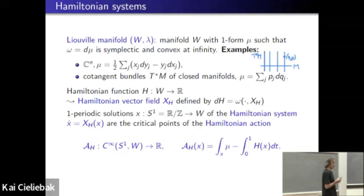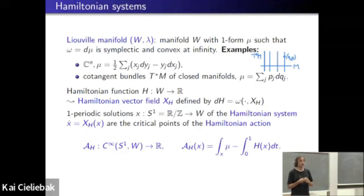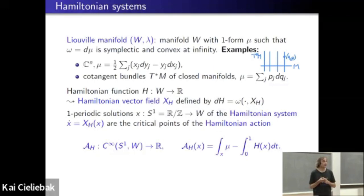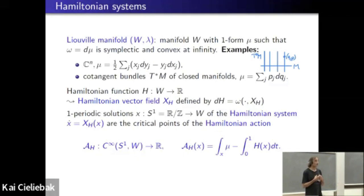Once we have a symplectic manifold, we can define Hamiltonian systems. Given any smooth function capital H on that manifold, we associate a vector field X_H by the implicit equation that dH equals the contraction of the vector field into the symplectic form — similar to defining a gradient when you have a scalar product, but here we have a skew-symmetric two-form. Since it's non-degenerate, this uniquely defines the vector field X_H. We can then look at the corresponding ODE ẋ = X_H(x) and solve it to get a Hamiltonian flow.